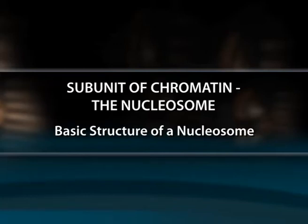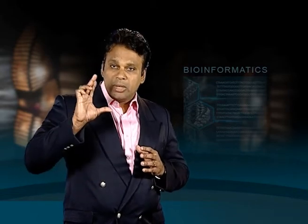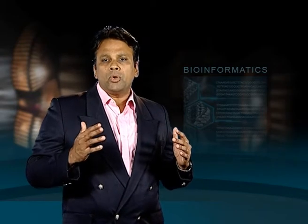Let us examine the basic structure of a nucleosome subunit of chromatin. The diameter of a nucleosome is 11 nanometers and its height is 6 nanometers. The length of DNA around it is 70 nanometers, which is equivalent to 200 base pairs. This is because 34 Angstrom units equals 3.4 nanometers, which is equivalent to 10 base pairs.